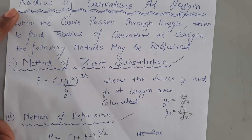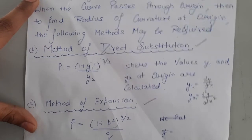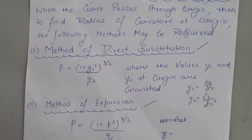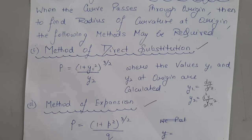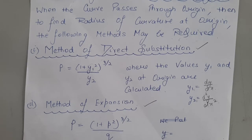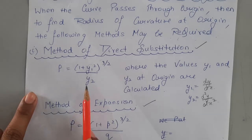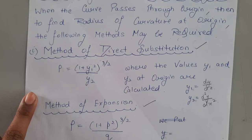Here y₂ should be expressed in terms of x and y. Find dy/dx and d²y/dx², then just substitute x=0, y=0, and you have the radius of curvature.